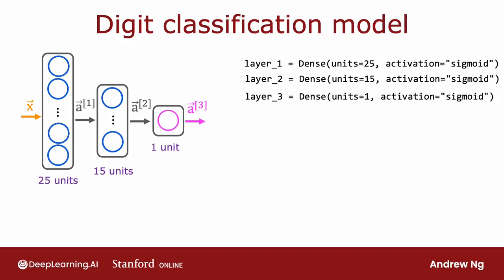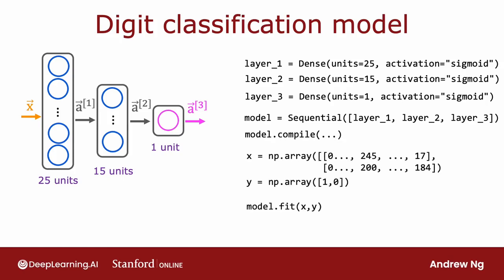With this new coding convention, with using TensorFlow's sequential function, you can instead specify what are layer 1, layer 2, layer 3, and tell TensorFlow to string the layers together for you into a neural network.